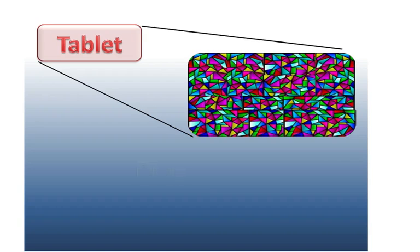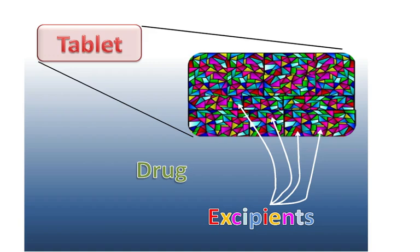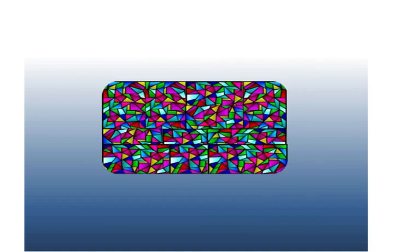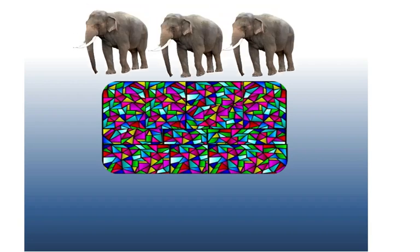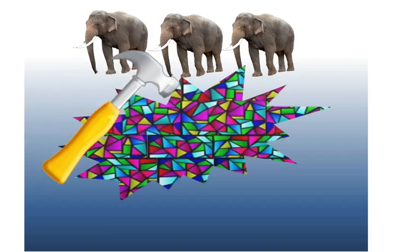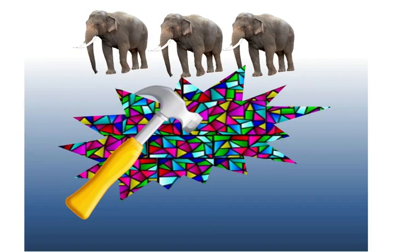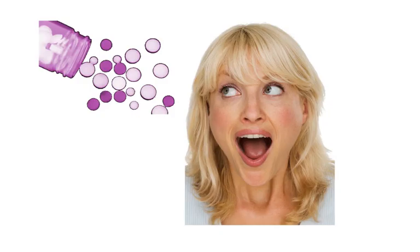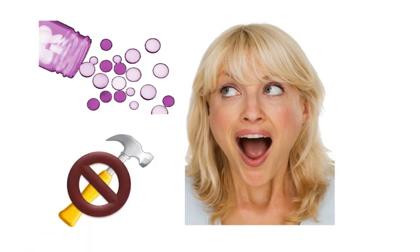Picture a tablet like a stained glass window, where the green sections represent particles containing the drug, while all the other colored particles all have some other purpose for being there. Making a tablet requires squeezing those particles together under tons of pressure which holds them together very tightly, so tight that it would take the force of a hammer to break them apart. If we're going to get the drug particles out of the tablet when we swallow it, there must be something in there to help, because we can't very well swallow a hammer.